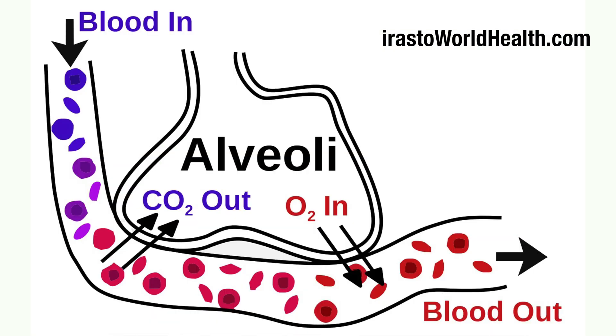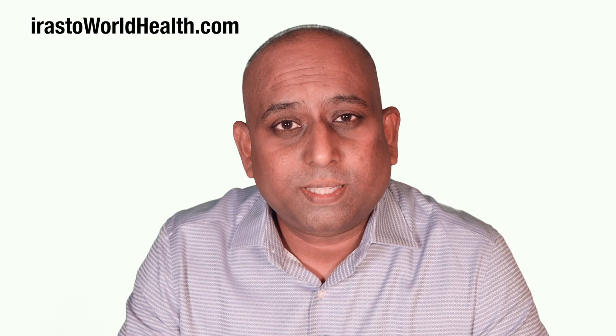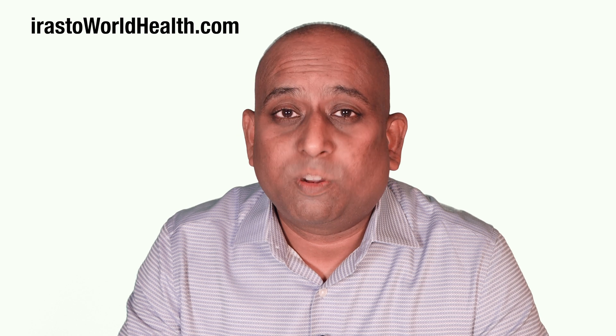What happens is when we breathe, air enters the lungs and from the lungs finally to the alveoli, where exchange of gases takes place. Carbon dioxide goes out and oxygen moves into the blood, and the blood goes to the heart and the heart pumps it, distributing it all over the body.